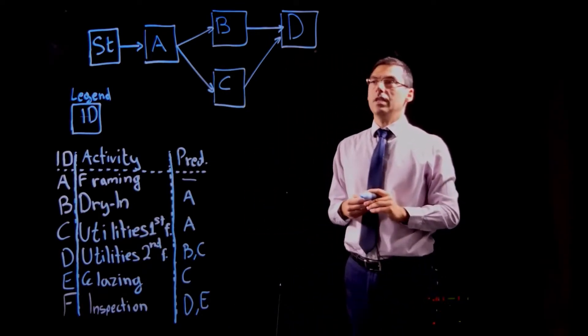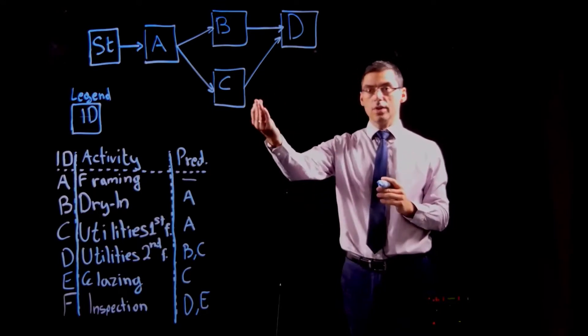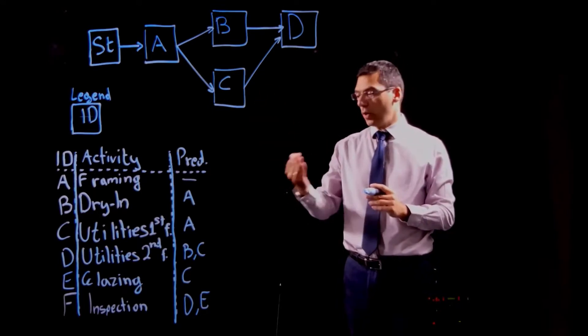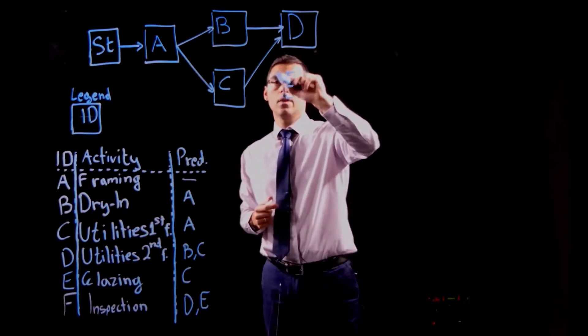Next one activity E. Activity E has a single predecessor activity C. I check it's already on the network so I can place activity E as well. There you go.